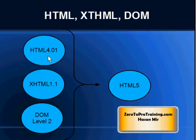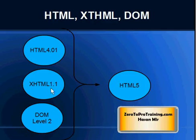XHTML provides extensibility to HTML — in XHTML you can create your own tags and use them, while in HTML you have to use predefined tags. You can consider XHTML as a combination of HTML and XML. Anyway, XHTML will no longer be separate; it will be part of HTML5. Document Object Model was there as well to create documents containing data and provide methods to be used with the documents, and this will be part of HTML5 as well.